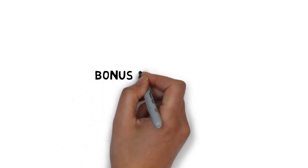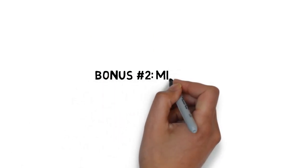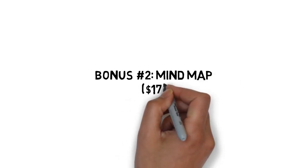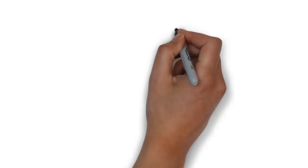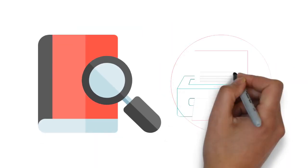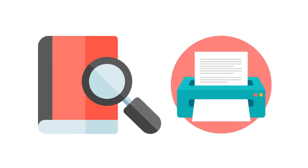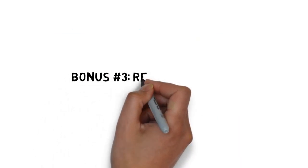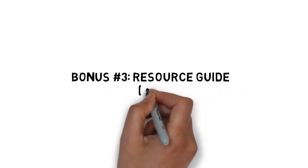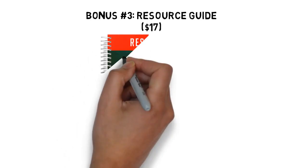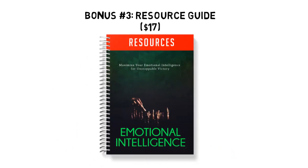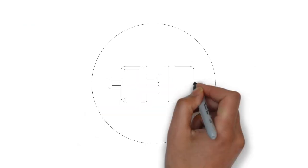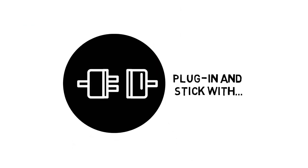Fast action bonus number two: emotional intelligence mind map, valued at $17. Some people learn better by looking at a mind map. The mind map gives you an overview of everything covered inside the guide. You can also print it out for quick reference anytime you need it. Fast action bonus number three: emotional intelligence resource guide, valued at $17. The resource guide gives you a quick point of reference to all of the resources mentioned throughout the guide. This makes it easy to plug in and stick with what you're looking for.